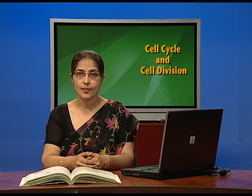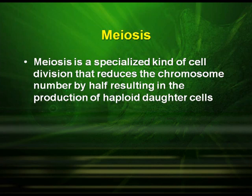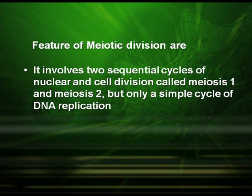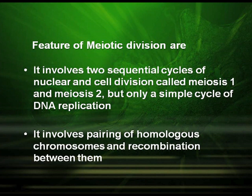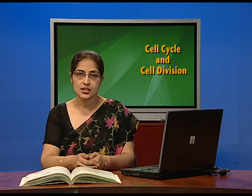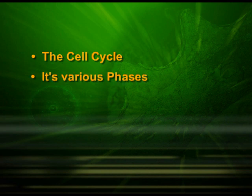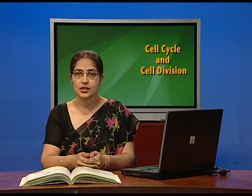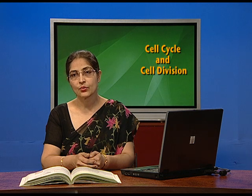Another kind of cell division is meiosis. Meiosis is a specialized kind of cell division that reduces the chromosome number by half, resulting in the production of haploid daughter cells. It occurs during gametogenesis in plants and animals, leading to the formation of haploid gametes. Meiosis involves two sequential cycles of nuclear and cell division called meiosis I and meiosis II, but only a single cycle of DNA replication. It involves pairing of homologous chromosomes and recombination between them. Four haploid daughter cells are formed at the end of meiosis. Today we have discussed the cell cycle, its various phases — the interphase and the M phase — which includes mitosis or at times meiosis. Further details about mitosis and meiosis shall be covered in the following episodes.